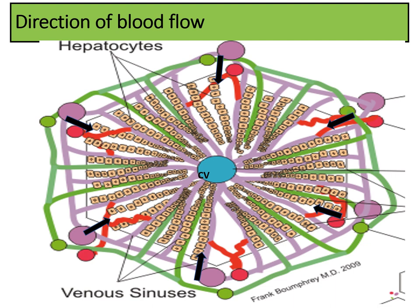Blood flows from the portal tract area through the hepatic sinusoids to the central vein — from periphery to center. Bile, synthesized by hepatocytes inside the lobule, flows in the opposite direction — from center to periphery — draining into the bile duct at the portal tract area.